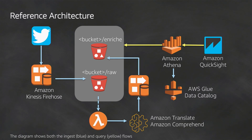Kinesis is split into four different services. Kinesis Data Streams, or KDS, is built and scaled on the concept of shards — one shard gives you one megabyte per second of ingest and two megabytes per second of egress. You can provision as many shards as you want. We have customers ingesting hundreds of gigabytes per second in KDS streams.